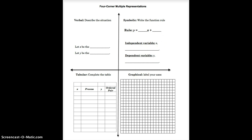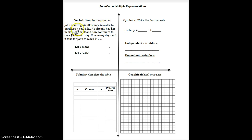So let's look at an example. Here we're given a verbal situation that describes the problem: John is saving his allowance in order to purchase a new bike. He already has $25 saved in his piggy bank and he continues to save $5 each day. The question is: how many days will it take for John to reach $125? The best way to approach this is to use the information in the problem and put it into a table.